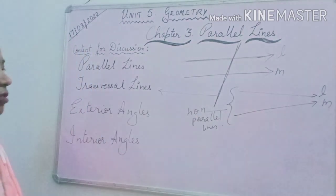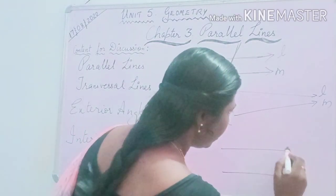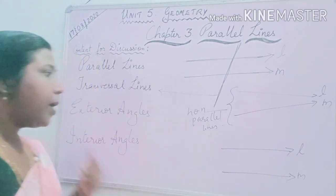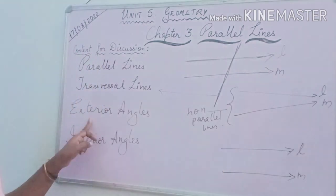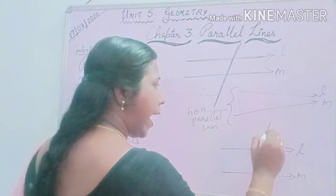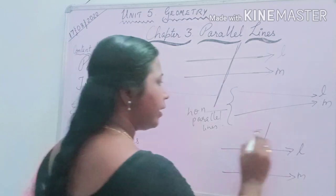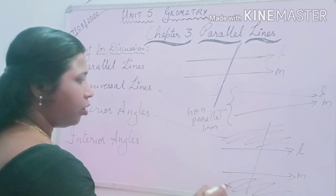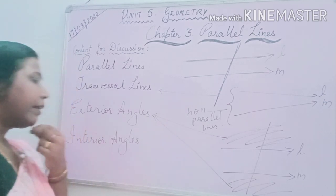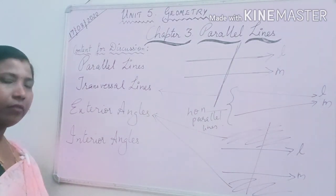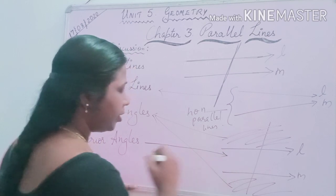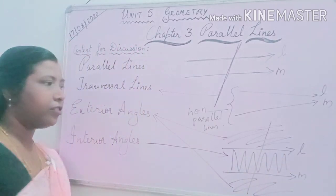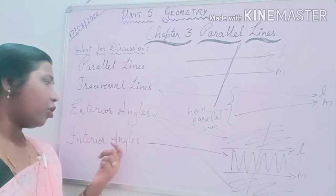Now let's talk about exterior angles. I will draw two parallel lines — these are parallel because they are at the same distance throughout. Exterior angles means whatever angles are formed at the outer part of the parallel lines are called exterior angles. Now for interior angles — the angles formed inside the parallel lines, in the shaded inside region, are called interior angles.